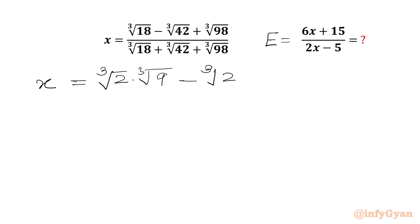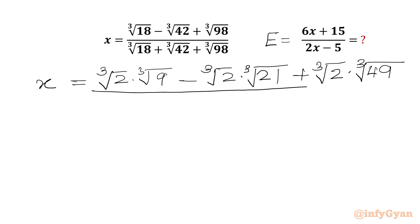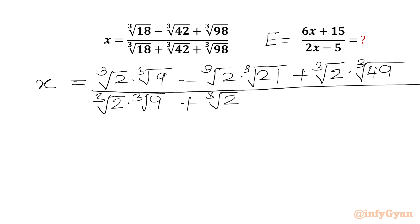We can factor 42 as 2 times 21. So cube root 2 times cube root 21, plus cube root 98. We can write 98 as 2 times 49, so we write cube root 2 times cube root 49. In the denominator we can write cube root 2 times cube root 9. This is cube root 18 plus cube root 2 times cube root 21. This is cube root 42 plus cube root 2 times cube root 49 as the numerator term.